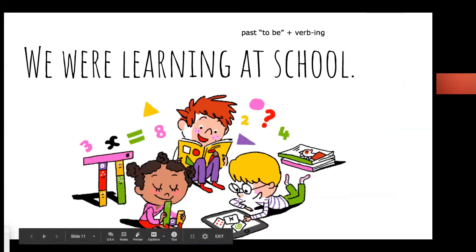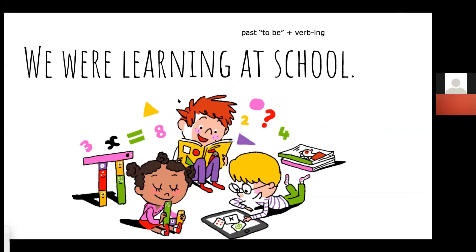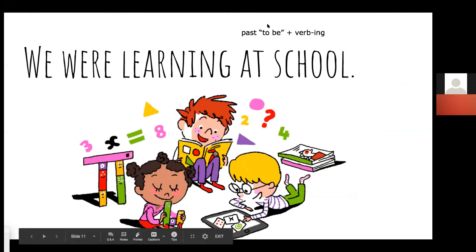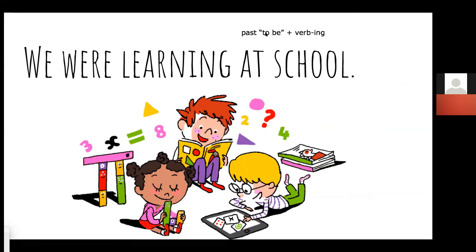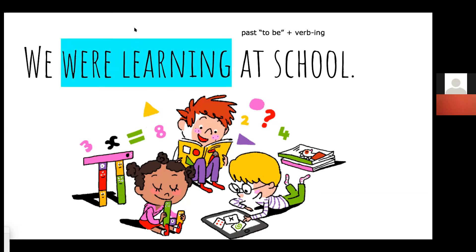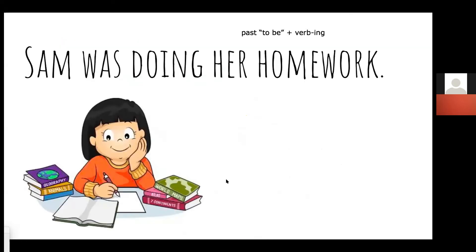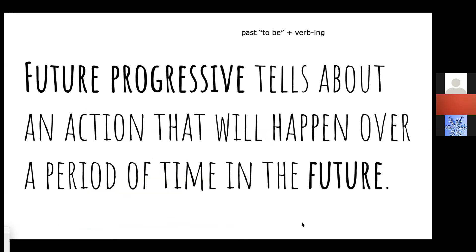Let's look at an example: 'We were learning at school.' The past progressive verb is 'were learning' — 'were' is our past tense of 'to be,' and 'learning' has the '-ing' ending. Another example: 'Sam was doing her homework.' The past progressive verb is 'was doing' — very good.